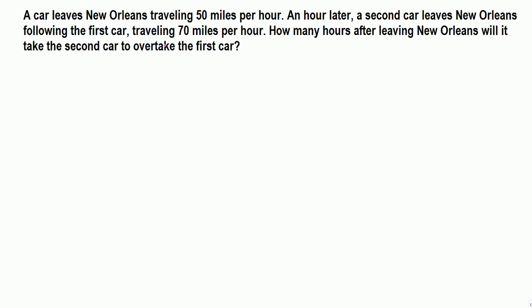Read the question carefully. We have this scenario: two cars leave New Orleans. Let's say this is New Orleans. First car leaves at the speed of 50 miles per hour. One hour later, a second car leaves New Orleans following the first car, traveling 70 miles per hour.